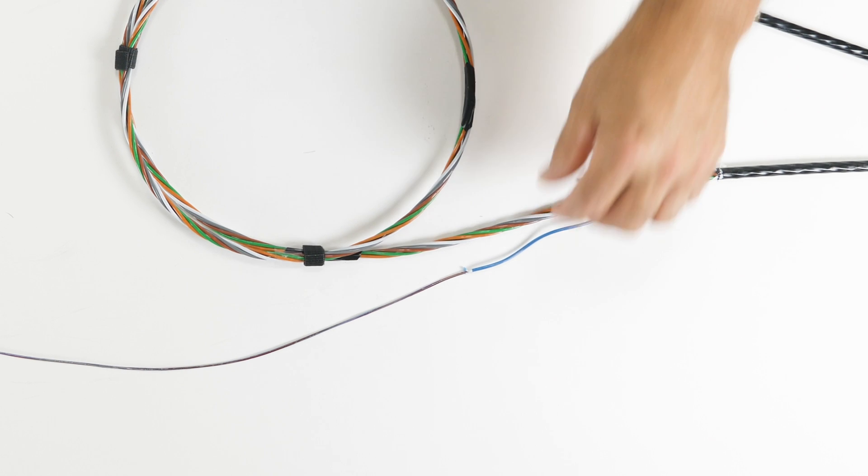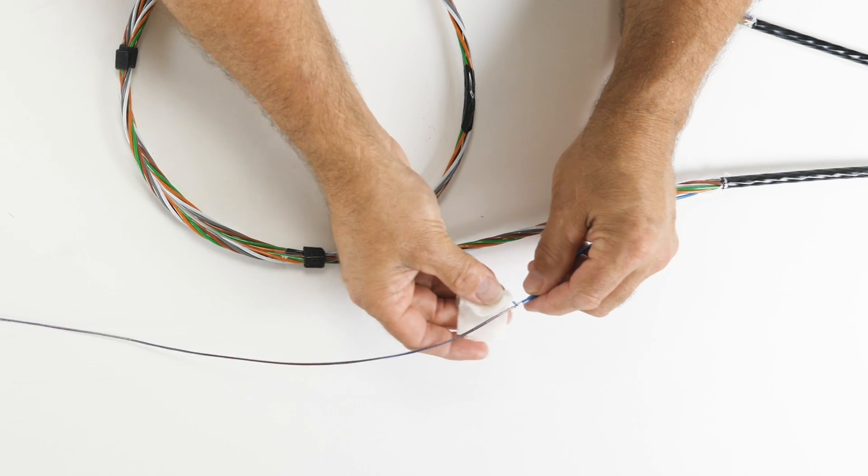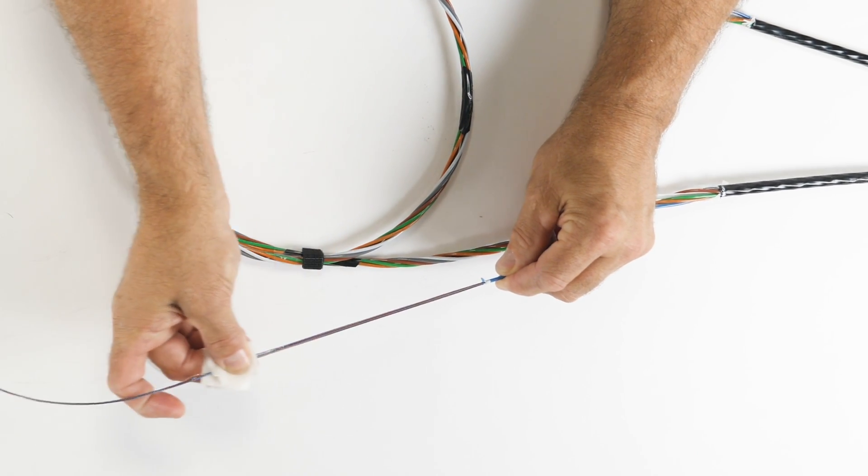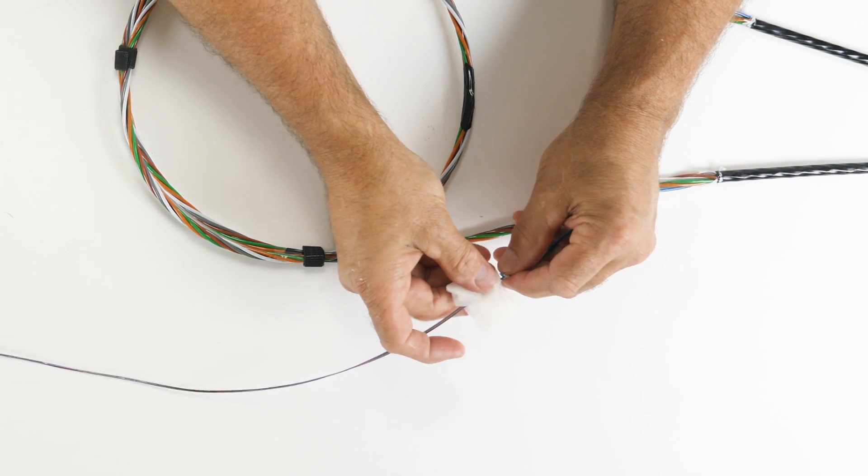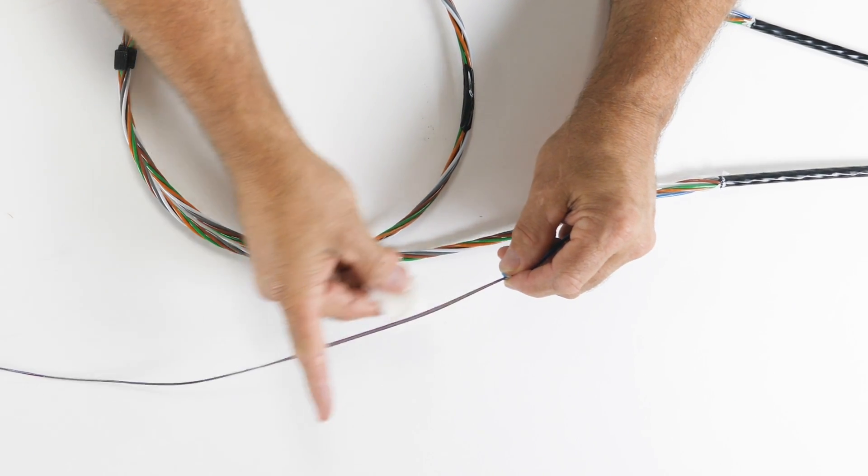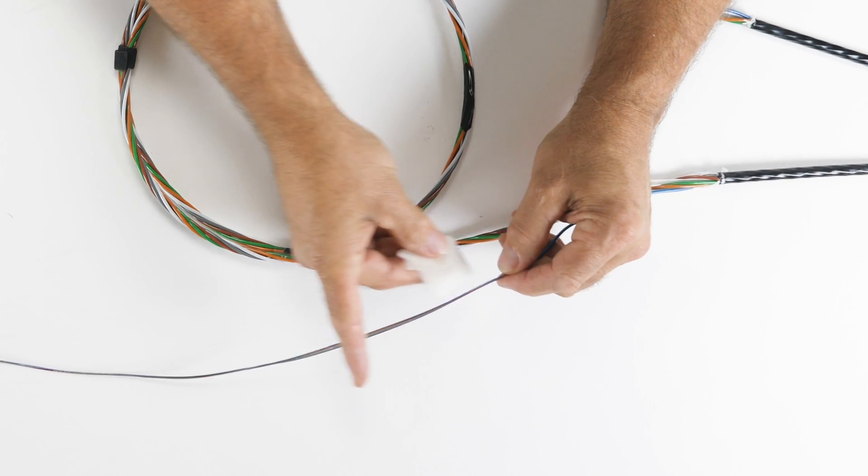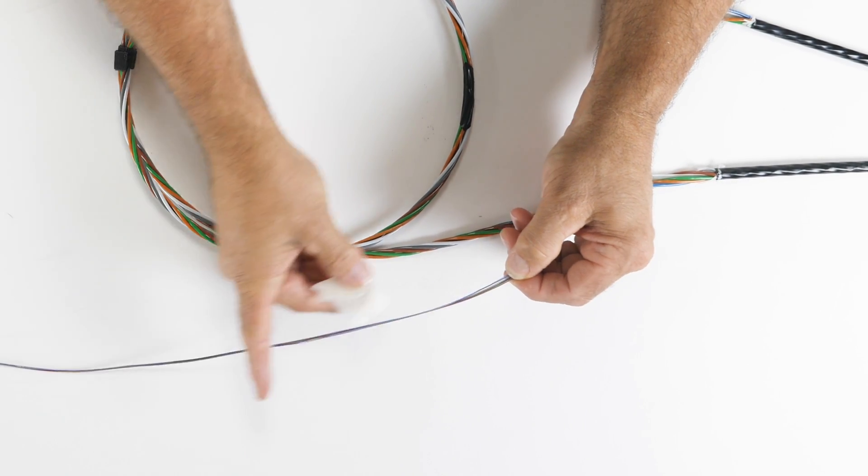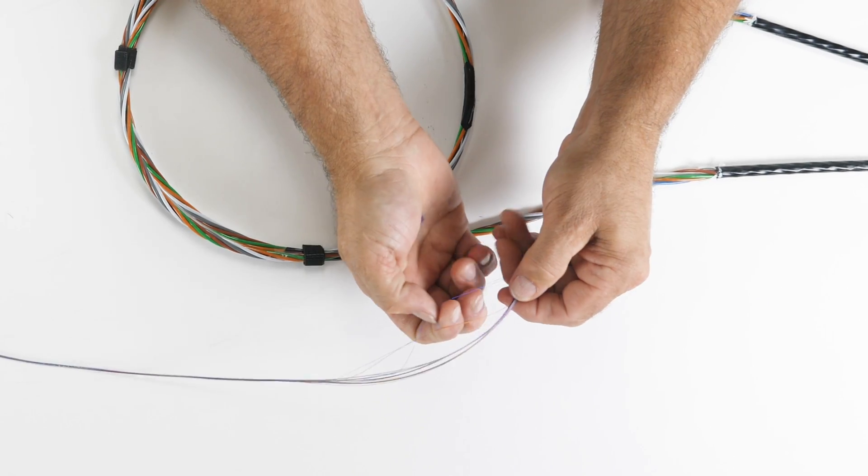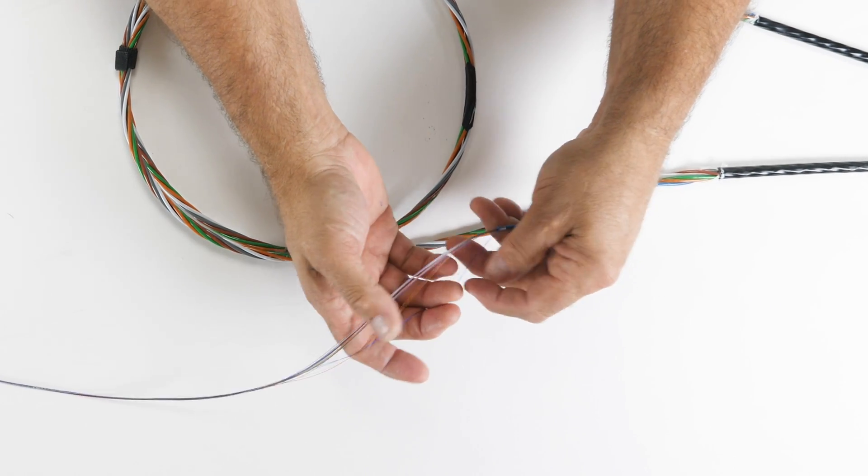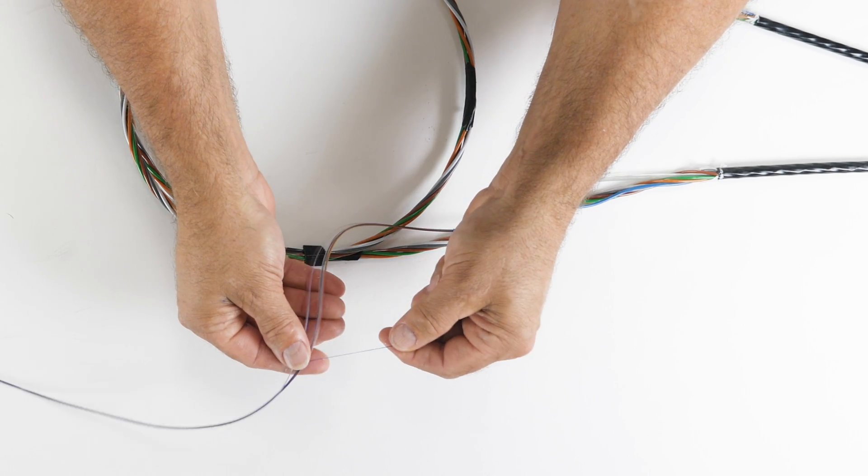In order to separate the two groups of fibers, you will need to locate the binder group inside the bundle. To perform this task, an approved fiber cleaning solution should be used to clean approximately 4 to 6 inches of all 24 fibers closest to the buffer tube. This method will expose and separate the binders for easy access. Locate both binders and slightly tug on them until you can separate each group of fibers.